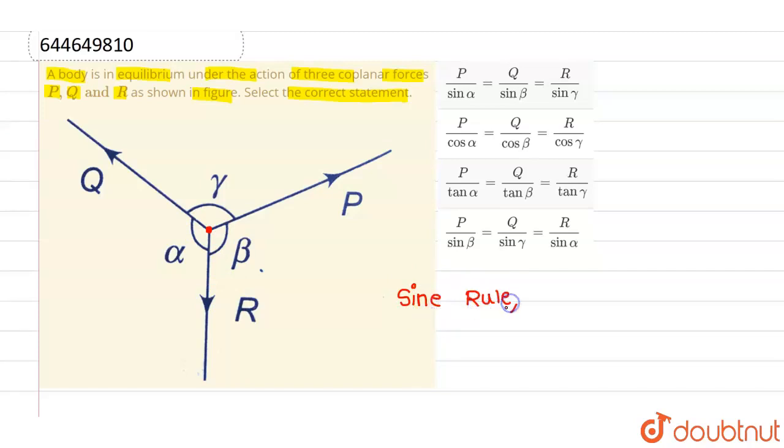So what exactly does sine rule tell? Let's say this P is the force, so P force divided by the sine of angle which is opposite to it. Now angle which is opposite to P is alpha, so P divided by sine alpha must be equals to another force which is Q divided by the sine of angle opposite to it which is beta. That must be equals to Q divided by sine beta.